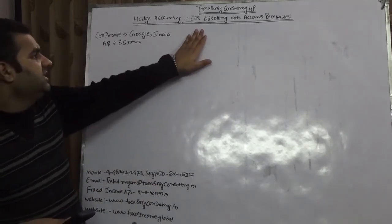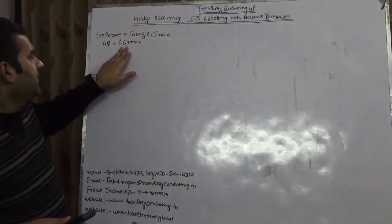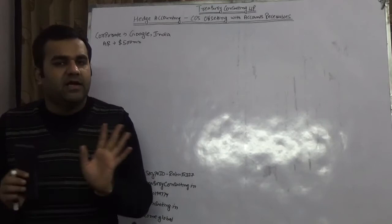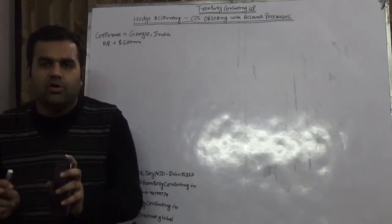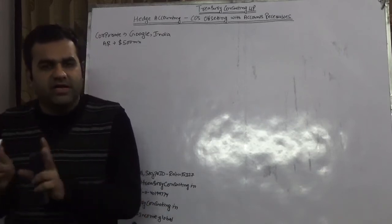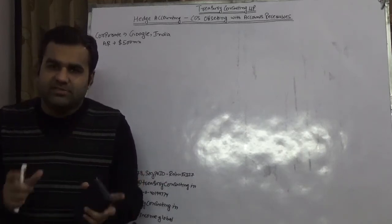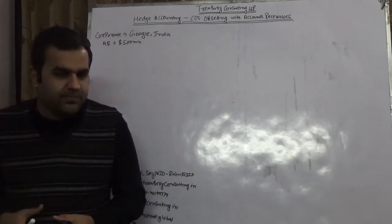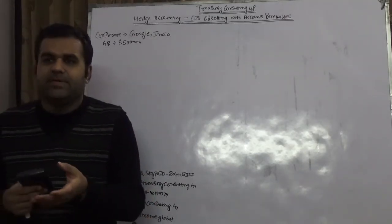It's hedge accounting CDS offsetting with account receivables. We are taking an example of a corporate called Google India. We would like to note upfront that the purpose of this video is only for examples — we don't want to distort the name of any company or corporate mentioned. It's only for the sake of examples, using well-known names so that it's easy for people to understand, since these companies are actually in that kind of business.